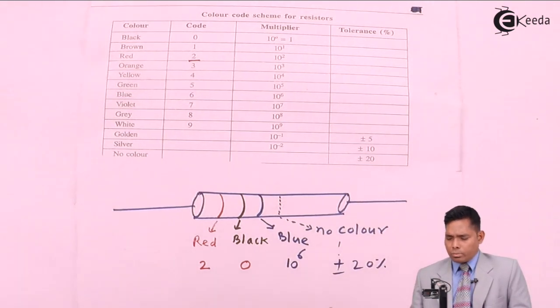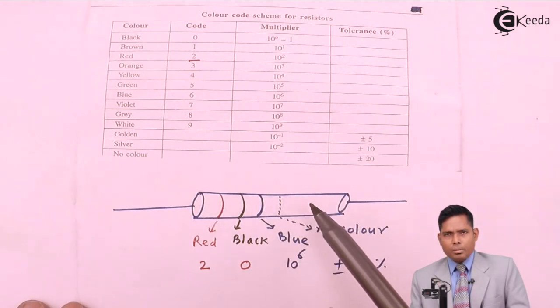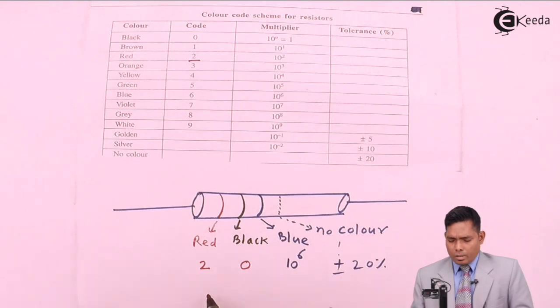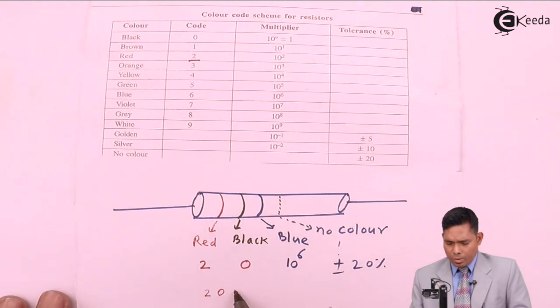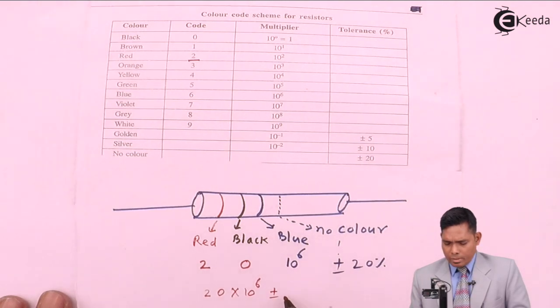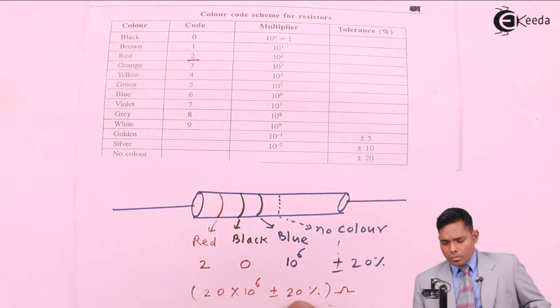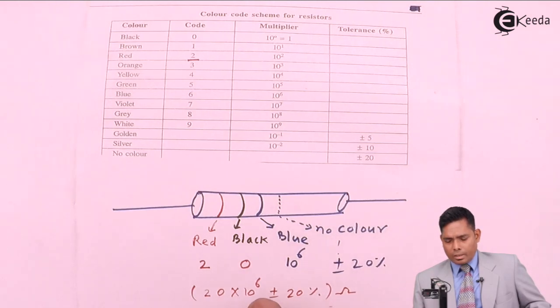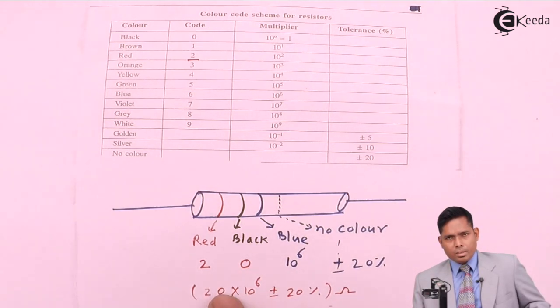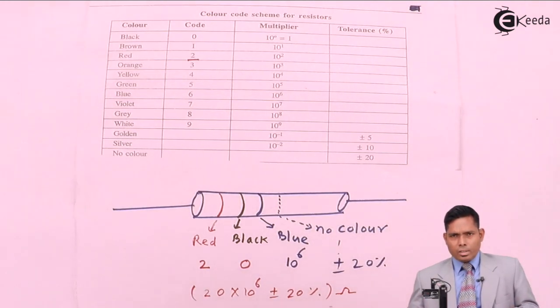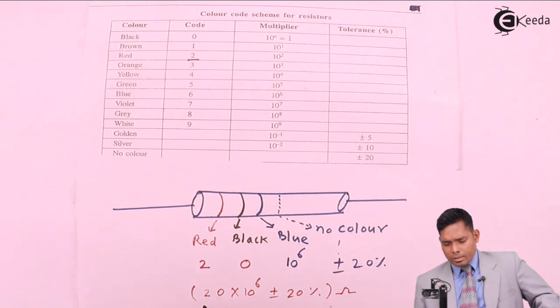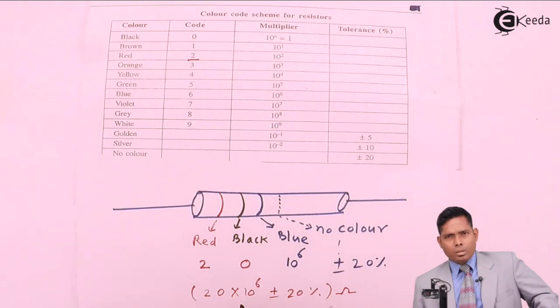That means the value of the resistance for this color combination would be 20 × 10^6 ± 20% ohm. This is the answer to this question. 20% of this value, so 20 × 10^6 plus 20% of this value and minus 20% of this value. So this is a range in which this has to be manufactured.